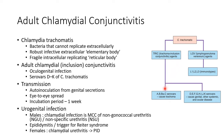The TRIC agents are further subdivided into serovars A, B, BA, and C, which are responsible for trachoma. The other group is serovars D to K of Chlamydia trachomatis, which cause genital, other systemic, and ocular diseases. The LGV agents are further subdivided into L1, L2, and L3. There are two forms of Chlamydia trachomatis: the robust infective extracellular elementary body, and the fragile intracellular replicating reticular body.